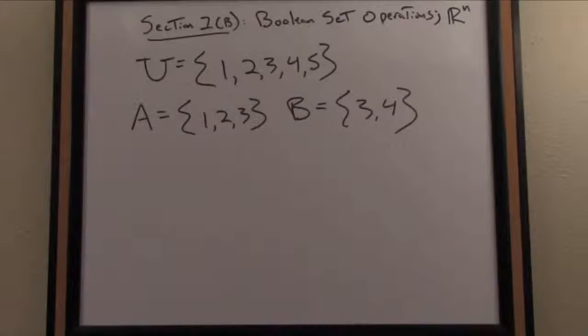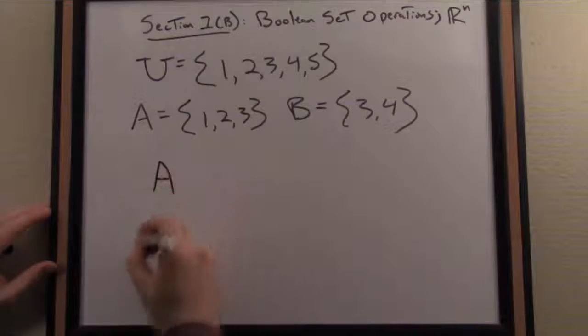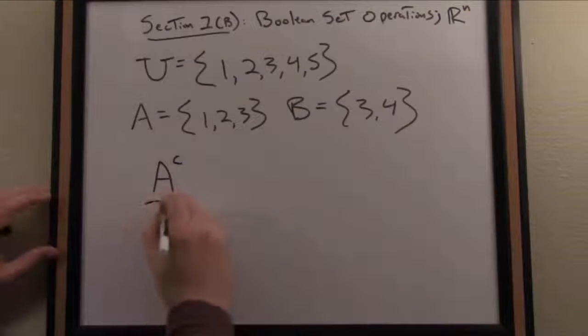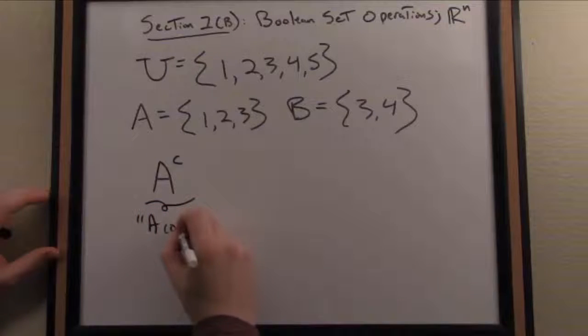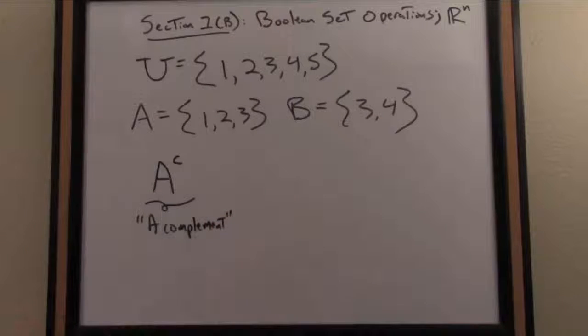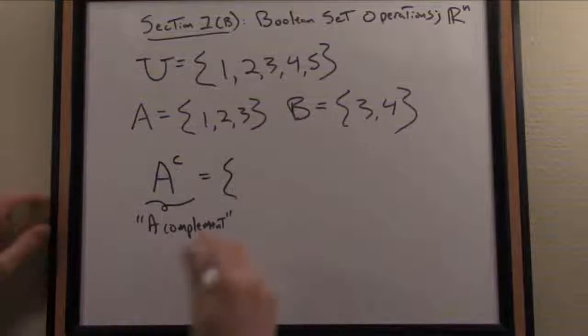Another operation on sets that we can describe quite easily is something called the complement of a set. The complement of a set in plain language is the negation of a set, or everything that's not in a particular set. We write the complement of a set, say A, using a superscript C, and you would read this aloud as 'A complement.' The intuitive definition of a complement is everything in our universe that is not in the set A.